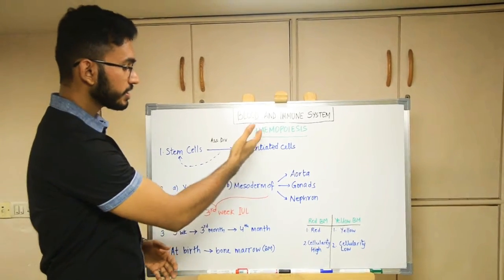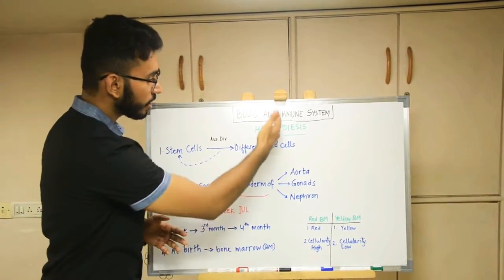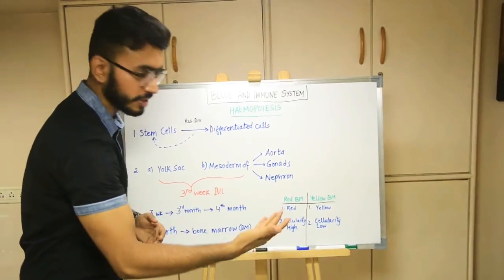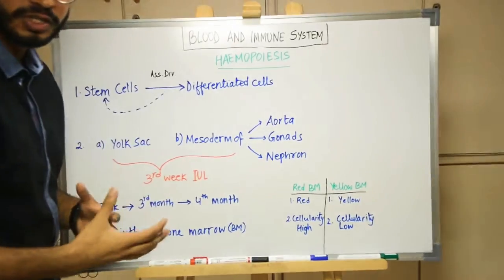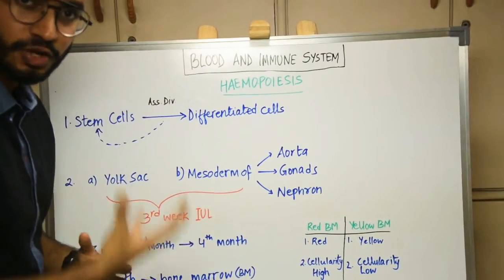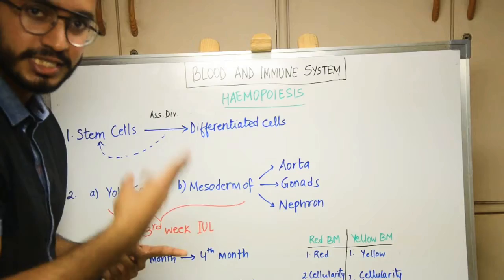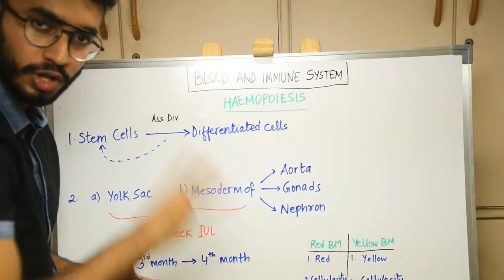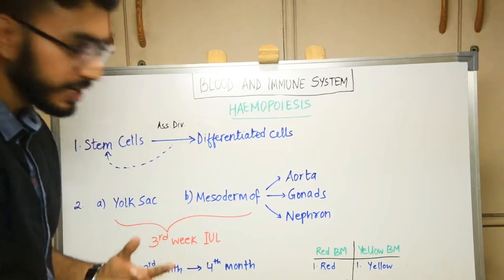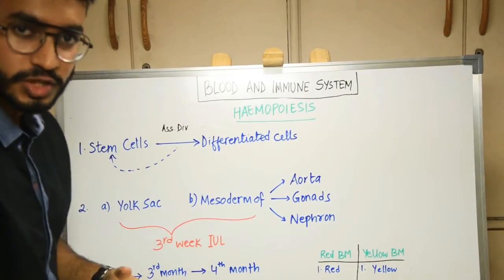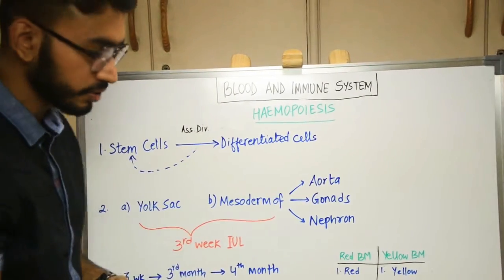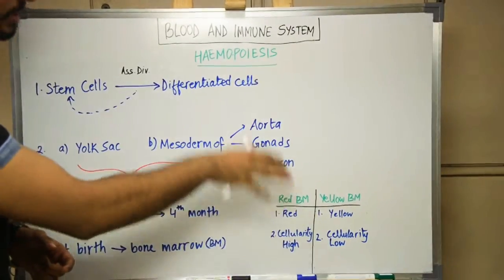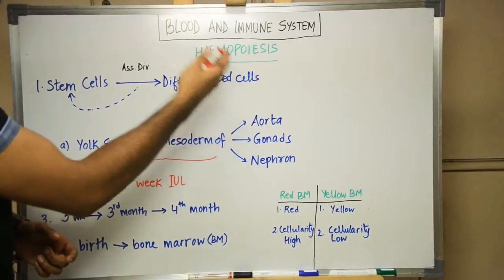Starting with hemopoiesis: the word itself means 'hemo' (blood) and 'poiesis' (synthesis or formation). Hemopoiesis refers to the process of formation of various blood cells — the RBCs, WBCs, and platelets. Here we'll consider the general formation of all three cells; the detailed individual cell formation will be covered in their respective videos.